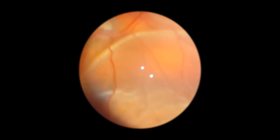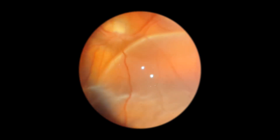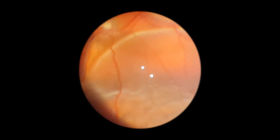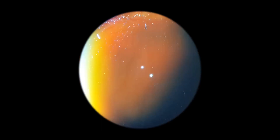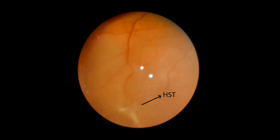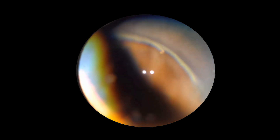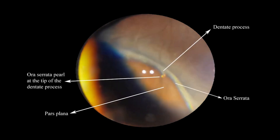This is a patient with a combined rhegmatogenous retinal detachment and choroidal detachment. You can see that the retina moves relatively freely while the choroid under the retina is more rigid. This is the sweeping movement of examination reaching up to the periphery to locate the horseshoe tear. This is an ora serrata pearl — a clinical curiosity. You can see the dentate process, the pars plana, the ora serrata, and the ora serrata pearl at the tip of the dentate process. They are usually seen in 20% of individuals and are thought to be drusen-like bodies in the periphery of the retina.